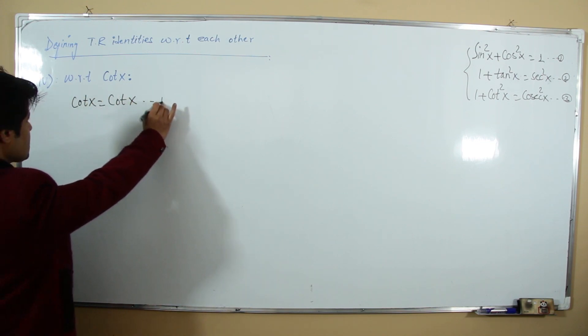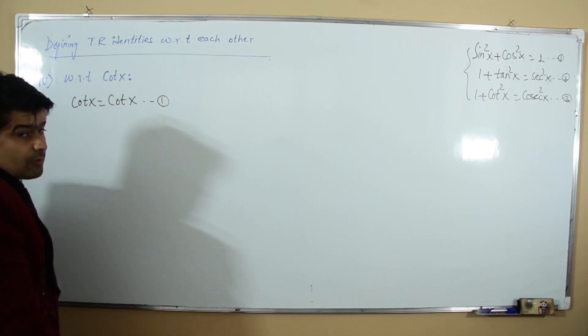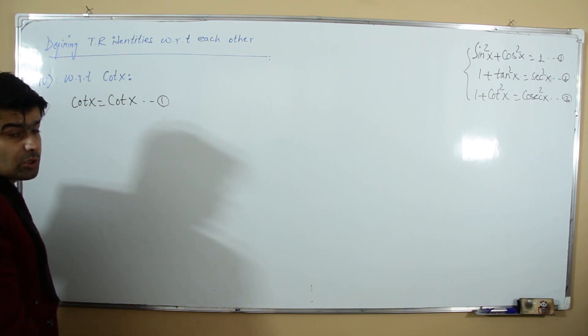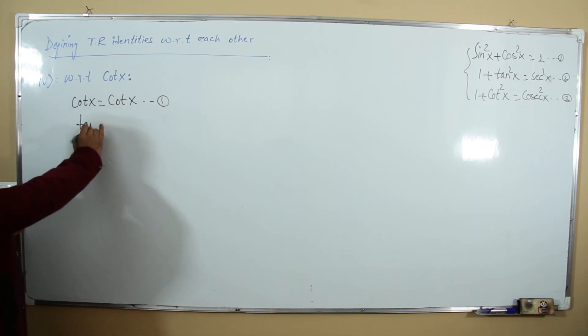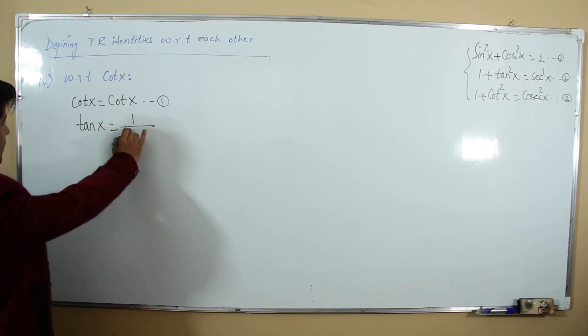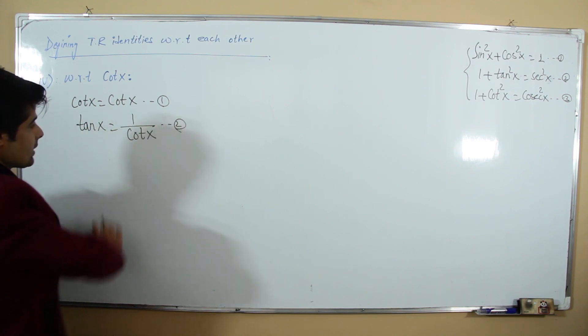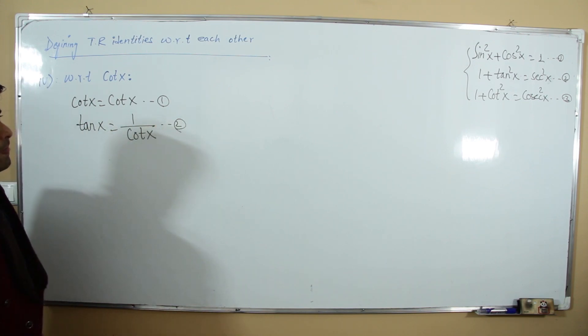With respect to cotangent: cotangent with respect to cotangent is cotangent — our first relation. Tangent is the reciprocal of cotangent: tan x = 1/cot x — our second relation.